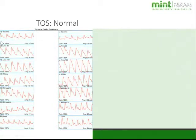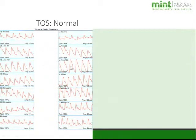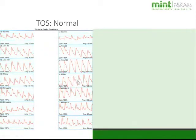Here is a normal thoracic outlet case. At baseline, we see sharp upstroke and dicrotic notch on both sides. With arms raised to 90 degrees, no real change. At 180 degrees overhead, the notch decreases slightly but is still present, and amplitude actually increases — likely a gravity effect seen in most normal patients. Moving through military position, no significant change in waveforms on either side.